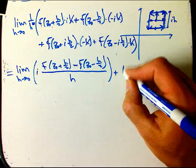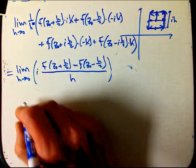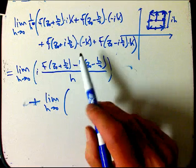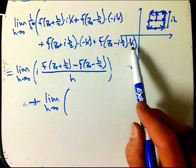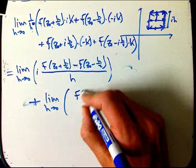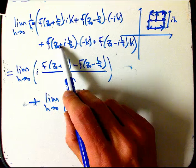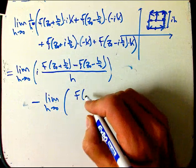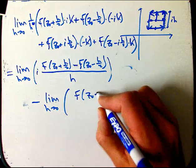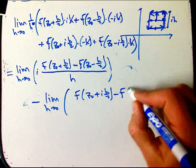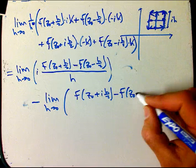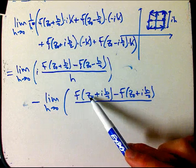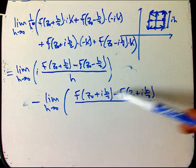Plus the limit as H goes to zero of the second term. Here I don't have an I, but I'll fix that in a minute. I still have the H over H squared phenomenon. I want to keep this one a plus and put a minus in front here, so I'm going to change that to a minus, factor out a minus sign, and then this changes to plus. Remember, this is the one where I'm wiggling up and down, comparing the values above and below. I'm starting at Z naught and symmetrically changing by half of IH one way and half of IH the other.